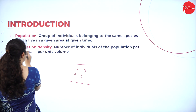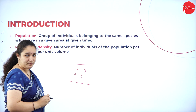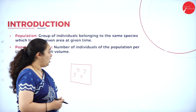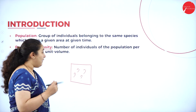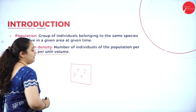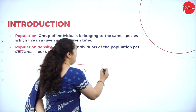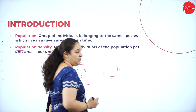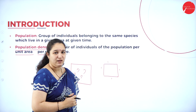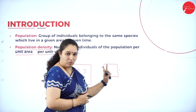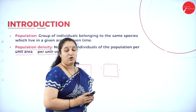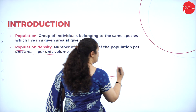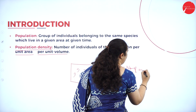What is population density? Population density is the number of individuals of the population per unit area per unit volume. In one particular unit area — length into breadth into height, volume also if I take — how many individuals are there? That number of individuals is called as population density.